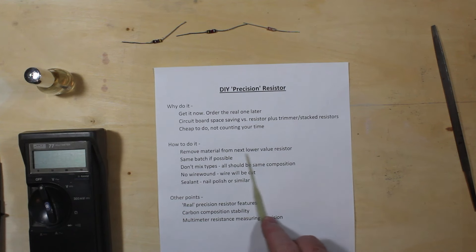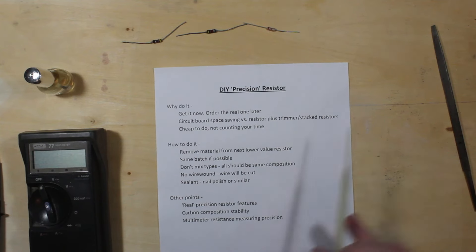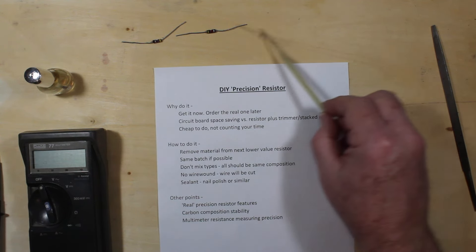Obviously, pick the next lower value of resistor from the standard values that you may have in your bins and then because you're removing material, resistance is going to go up. Try and get the same batch, if you can, of the kind of resistor that you're doing and don't mix types.